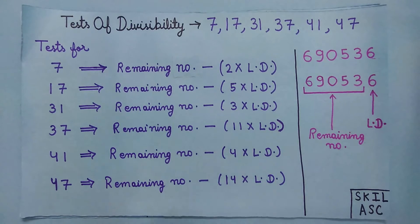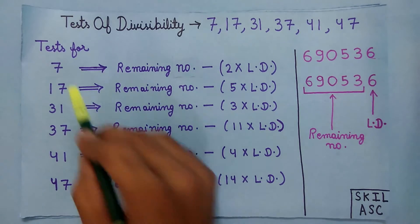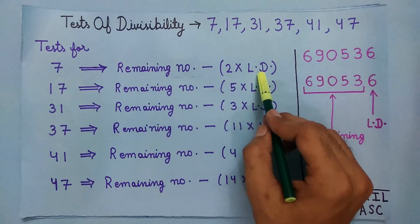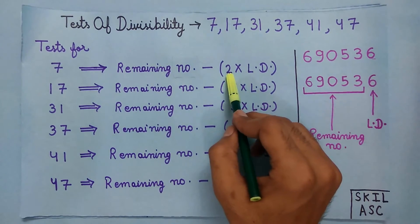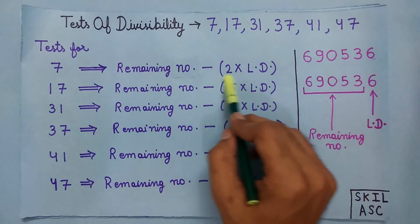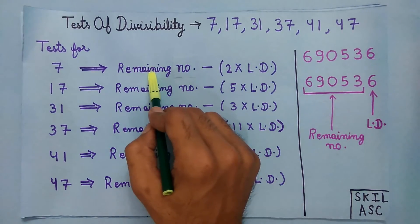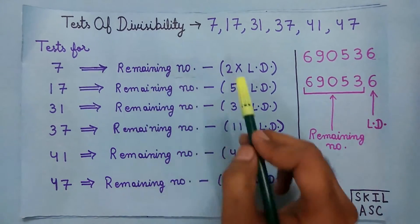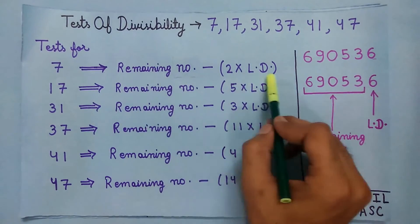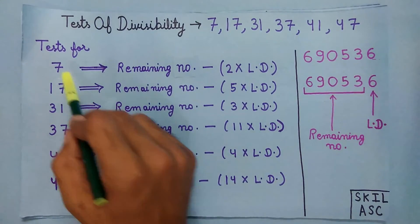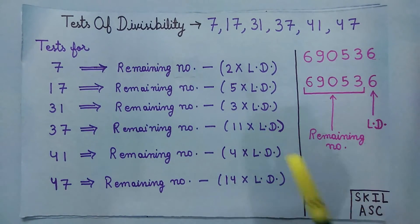To check if a number is divisible by 7 or not, multiply the last digit by 2 and then subtract this from the remaining number. If this value is divisible by 7, then the number is also divisible by 7.